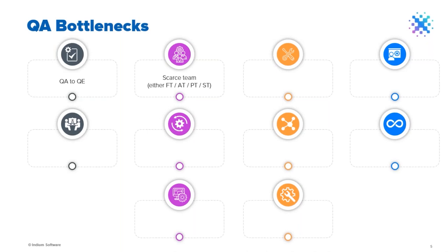The second bottleneck: most customers have teams that do not cover everything. For example, customers may have very good functional testers but they will lack in automation, slowing down the QA cycle. Or they may have good automation but lack niche testing skills like performance testing or security testing. What happens is they miss performance and security testing in every cycle, and the application eventually fails non-functionally at the customer side. That is another important pain point.